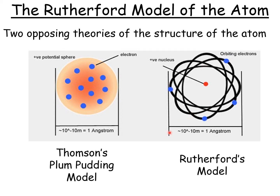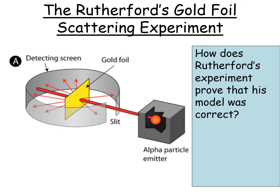How did we prove Rutherford's model was correct and Thomson's was wrong? We do an experiment. Rutherford performed the gold foil scattering experiment — he took a source of alpha radiation, fired it towards a gold foil, and had a detector going around it to see what would happen to the alpha particles as they passed through. The question is: how does the experiment prove his model was correct?